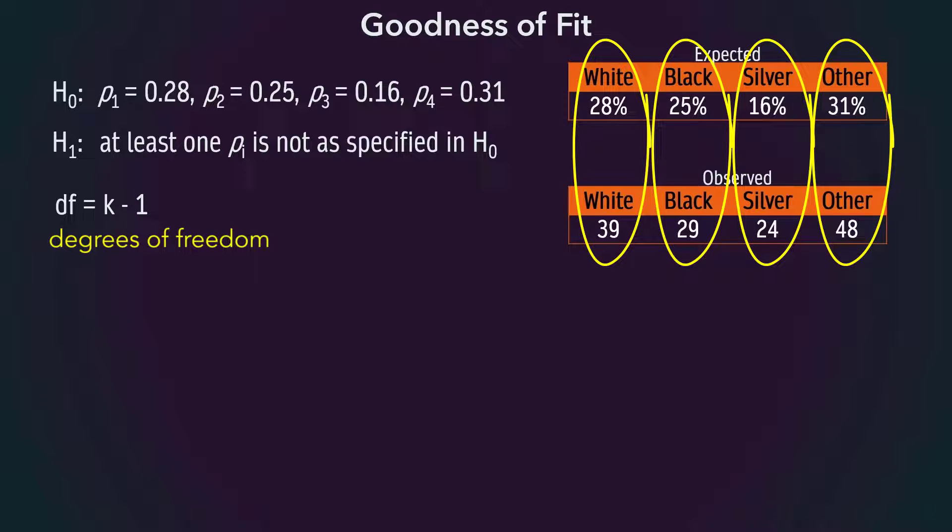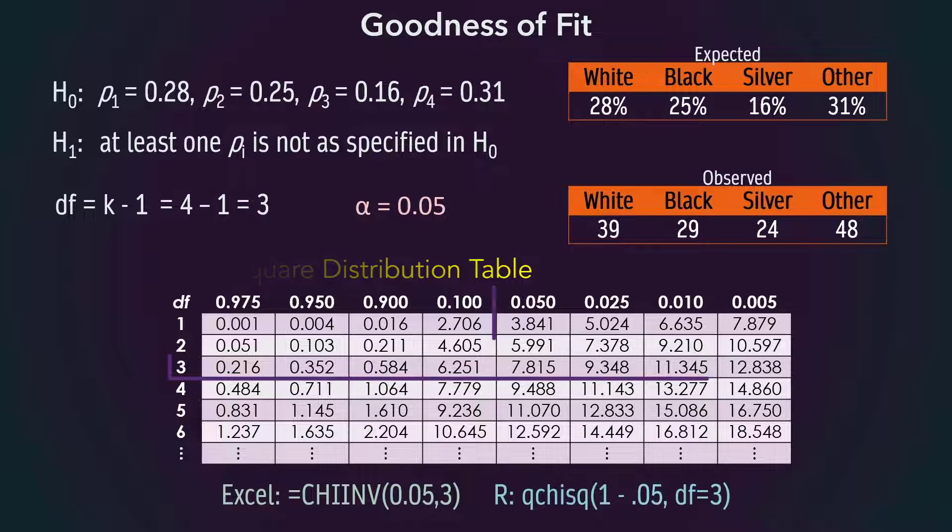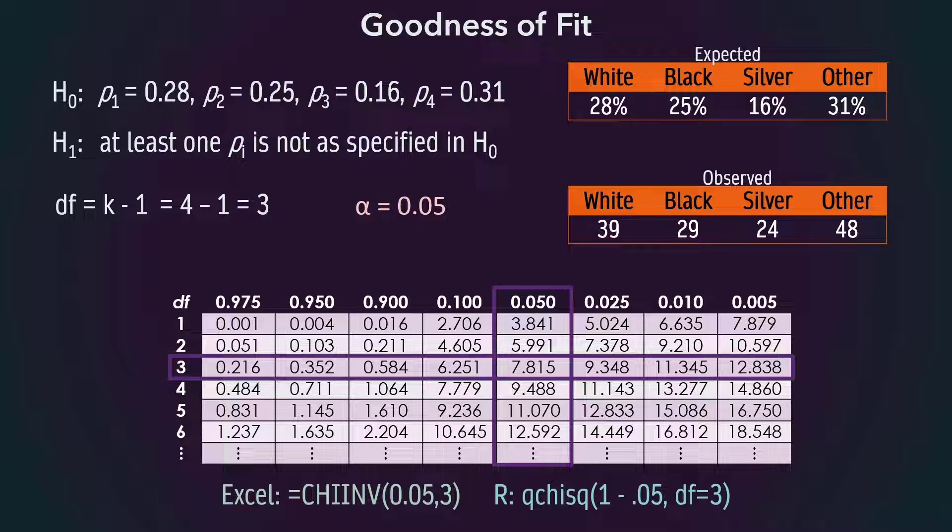Since we have 4 categories here, the degrees of freedom will be 3. At alpha equals 0.05, with degrees of freedom equals 3, the critical value from the table or software is 7.815. So the rejection region is where the observed chi-square is greater than 7.815.